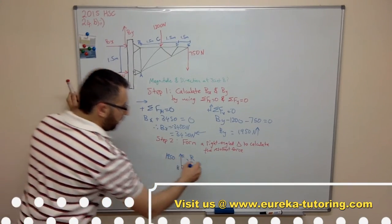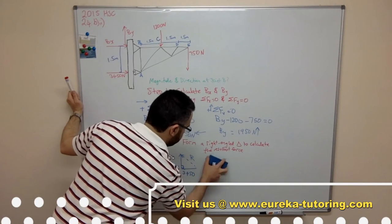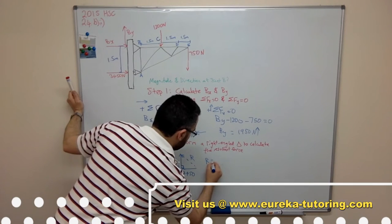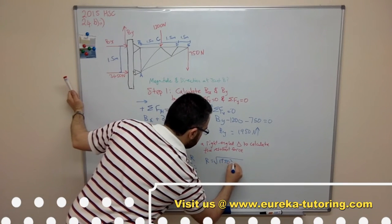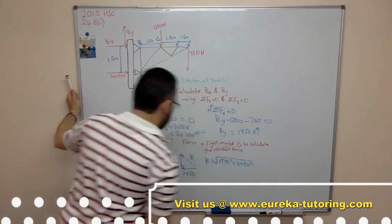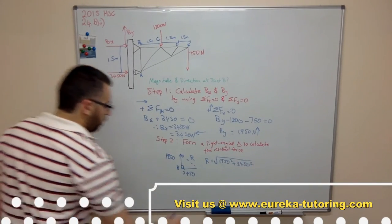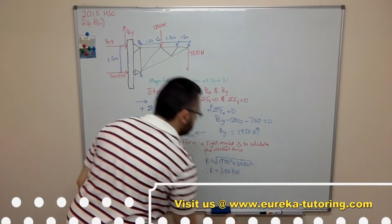So using Pythagoras, R equals square root of 1950 squared plus 3450 squared. And we should get a value of, therefore R equals 3963 newtons.